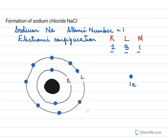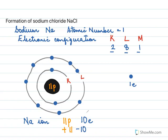After losing that one electron, we get something called the sodium ion. Inside the nucleus there are 11 protons because the nucleus hasn't lost anything. But on the outside it has lost one electron, so now it has just 10 electrons. Protons give a positive charge and electrons give a negative charge, so the net charge is plus 1. That's why we call it a sodium ion, Na⁺.